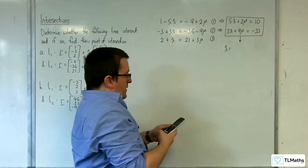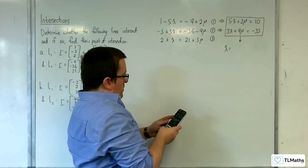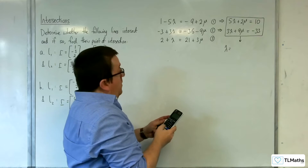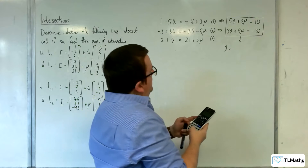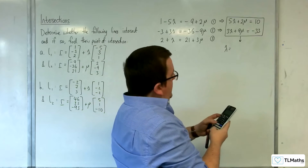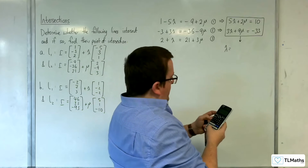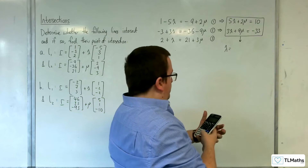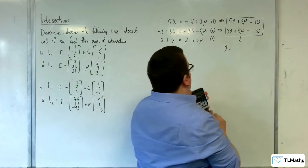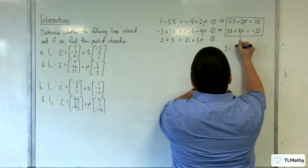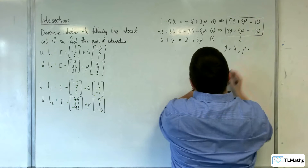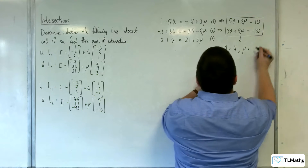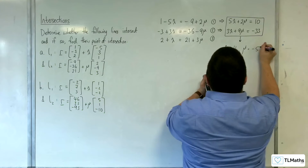I'm going to pop these equations into my simultaneous equation solver on my calculator: 5, 2, 10 and 3, 9, minus 33. So we should get λ is 4 and μ is minus 5.